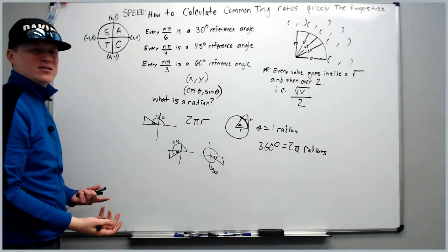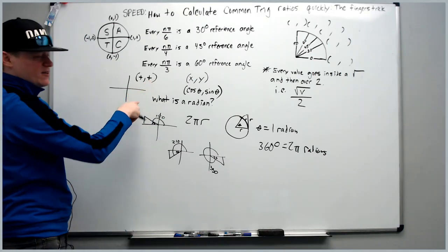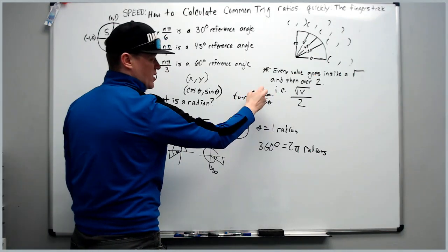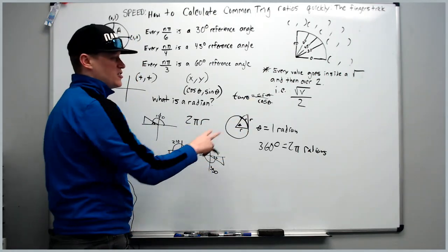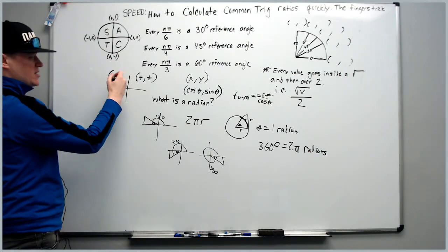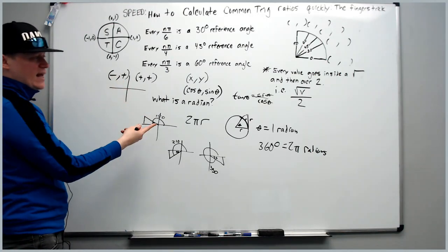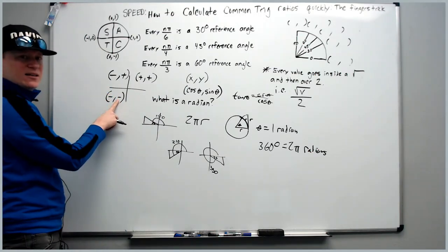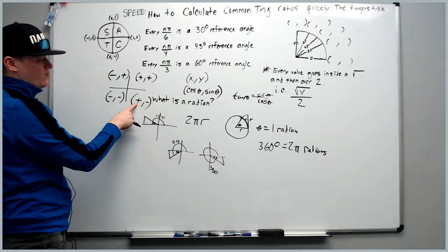How do we determine the plus or minus sign? It's determined by x and y. In the first quadrant both are positive, so cosine, sine, and tangent are all positive. In the second quadrant x is negative and y is positive, so cosine is negative and sine is positive, making tangent negative. Think of tangent as having a last name: sine over cosine. In the third quadrant both x and y are negative, so cosine and sine are negative, but tangent — the ratio of two negatives — is positive.